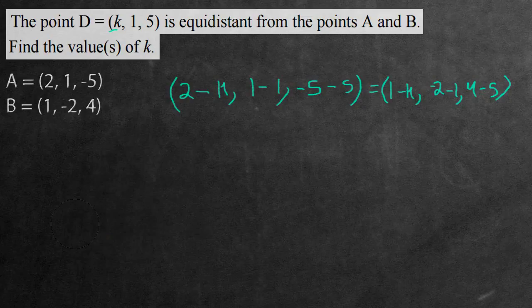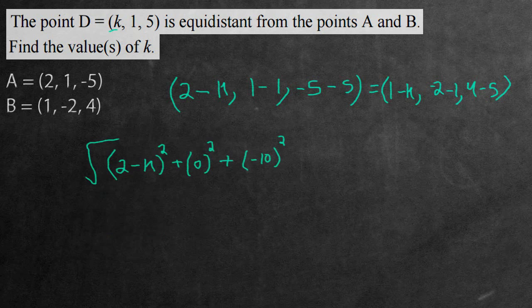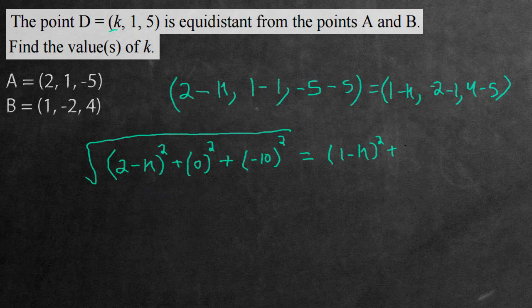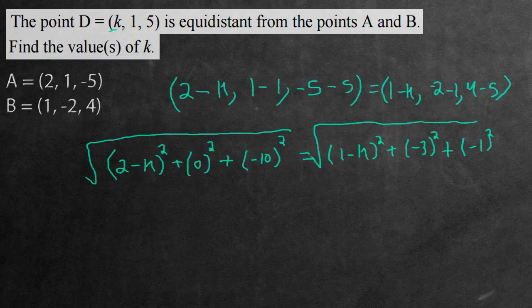So how do we find length of a vector? We're going to be using the formula for the length of a vector, which is all of the components of the vector squared and added together. So 2 subtract K squared, plus 0 squared, plus negative 10 squared, all of this square rooted. This is the length of the directed line segment from D to A. So this is equivalent to 1 subtract K squared, plus negative 3 squared, plus negative 1 squared, all of this square rooted. So now we just use some algebra to solve for the K variable.